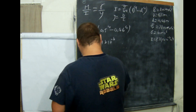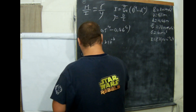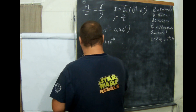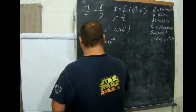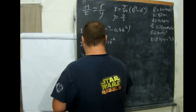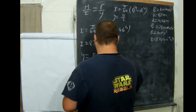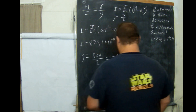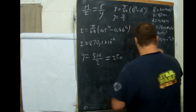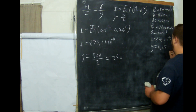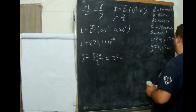Y is 500 over 2, which is 250 mm. So Y is equal to 0,25 meters.